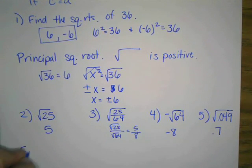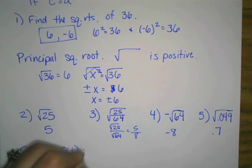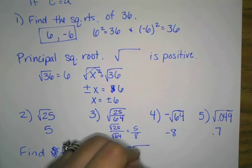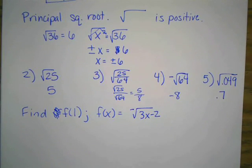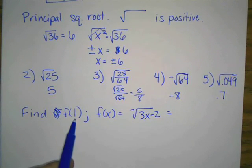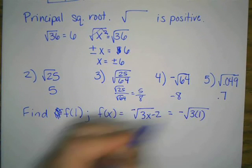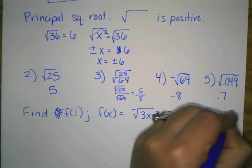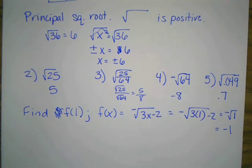Next thing I'm going to ask you to do is find f of 1 when f of x equals negative square root of 3x minus 2. And I know I'm going fast, but this is where you get to push pause. So what do we do with this f of 1? We plug it in place of x. So we have negative square root of 3 times 1 minus 2. 3 times 1 is 3, minus 2. 3 minus 2 is 1. So we have negative square root of 1. Square root of 1 is 1. And then we make that negative, so that's negative 1.